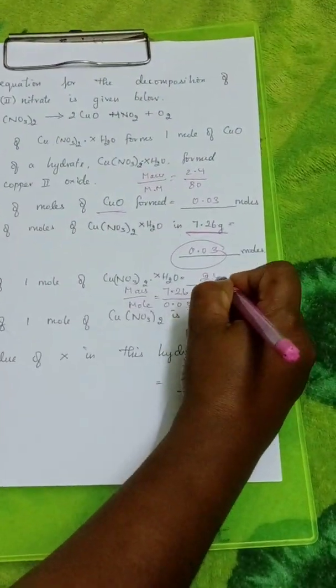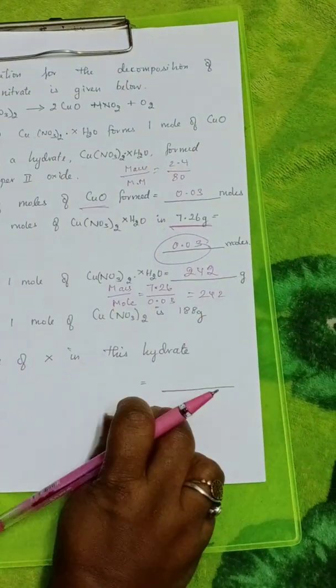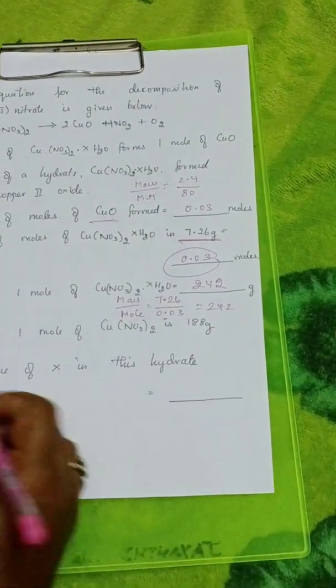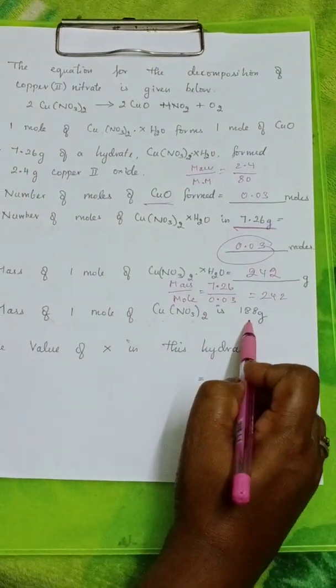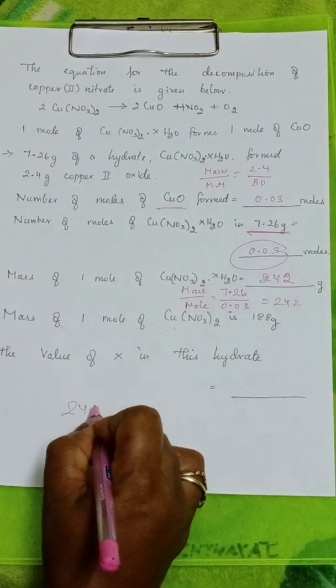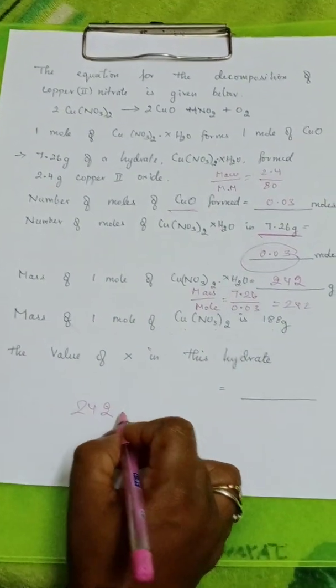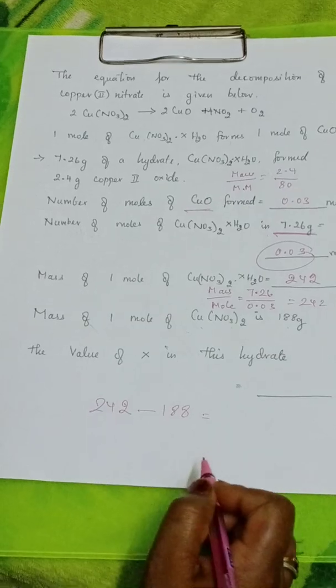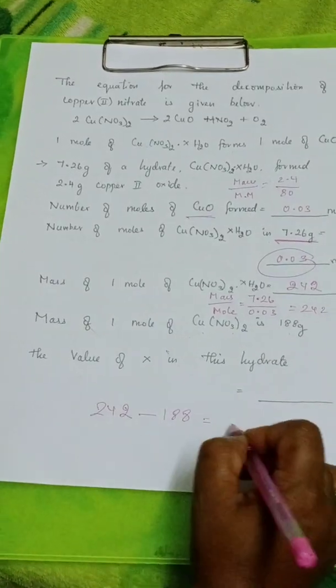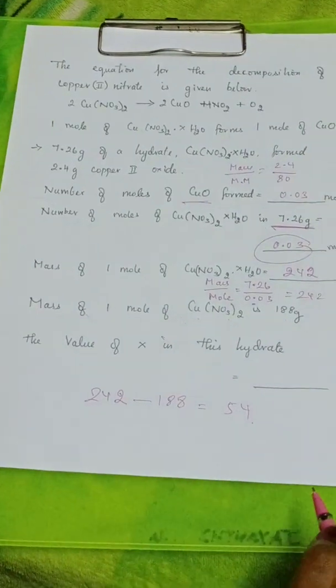242 grams of hydrated copper nitrate. Now, mass of 1 mole of copper nitrate is 188. So, 242 minus 188 is 54.